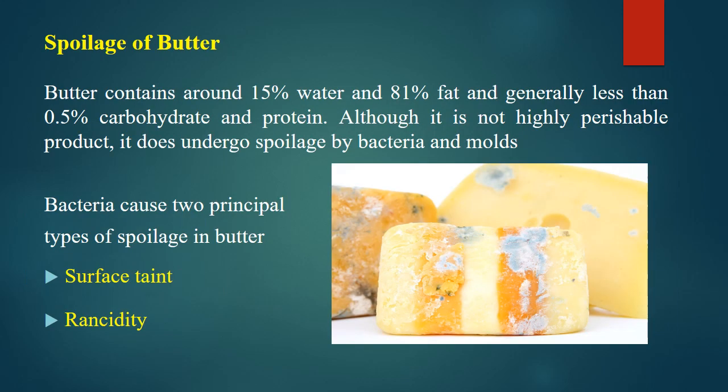Now specifically we will discuss about the spoilage of butter. Butter contains around 15% water, 81% fat, and generally less than 0.5% carbohydrate and protein. Although it is not a highly perishable product, it does undergo spoilage by bacteria and molds. Bacteria cause two principal types of spoilage in butter: one is surface taint and another is rancidity.